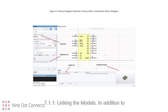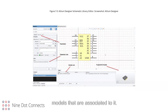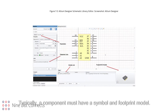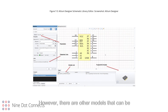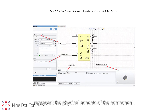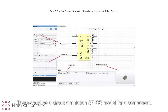Section 7.1.1: Linking the Models. In addition to storing components, the library maintains the links between the component and the models that are associated to it. Models are a representation of the component to accommodate different aspects of the design. Typically, a component must have a symbol and footprint model. However, there are other models that can be employed, depending on the capability of the EDA tool being used. For example, one may have a 3D model to represent the physical aspects of the component, or a circuit simulation SPICE model.